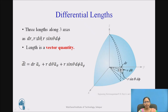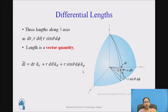The three differential lengths along the three axes are dr, r·dθ, and r·sinθ·dφ. The length is a vector quantity, so we can write it as dl̄ = dr·ār + r·dθ·āθ + r·sinθ·dφ·āφ.